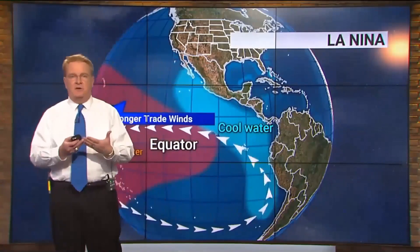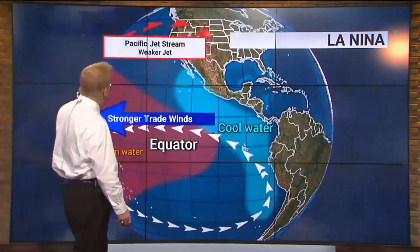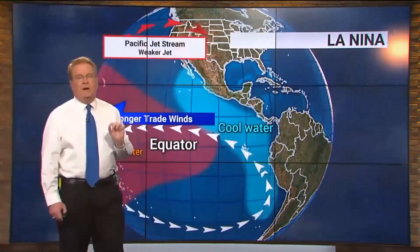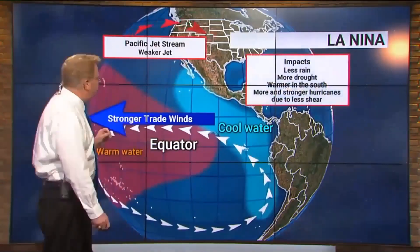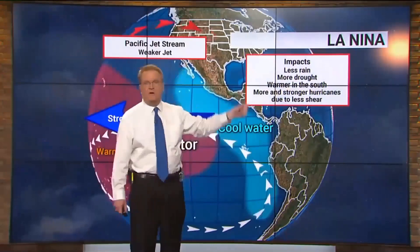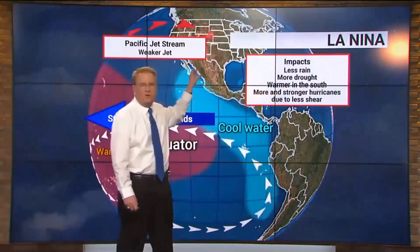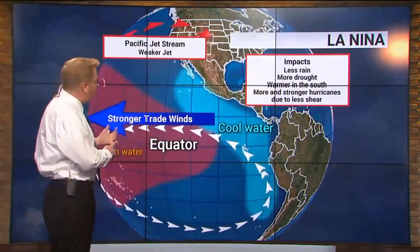That cooler water also causes the air above it to be cooler. What does that do? It causes the Pacific jet stream to be weaker and get pushed farther to the north. When it gets pushed farther to the north, there's less rain across the southern parts of the country — there's more to the north — but not as much across the southern part, which is where we live. And that causes more drought.